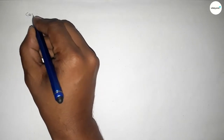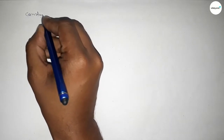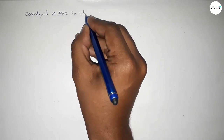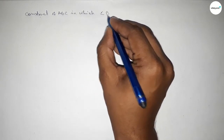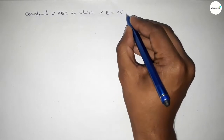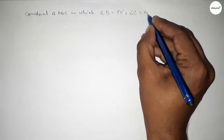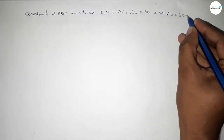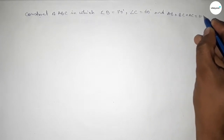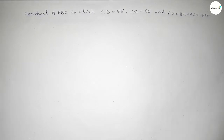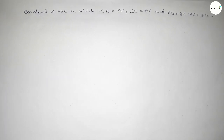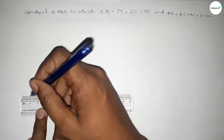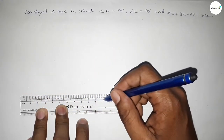Hi everyone, welcome to Essay Share Classes. Today in this video we have to construct a triangle ABC in which angle B equals 70 degrees, angle C equals 60 degrees, and the sum of three sides equals 11.2 centimeters. So let's start the video. First of all, drawing here a line of length 11.2 centimeters.